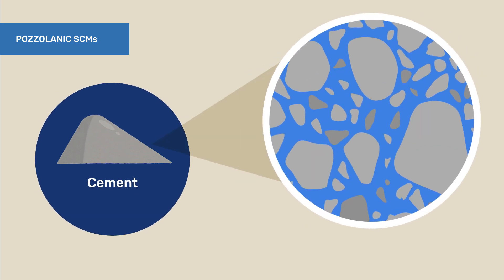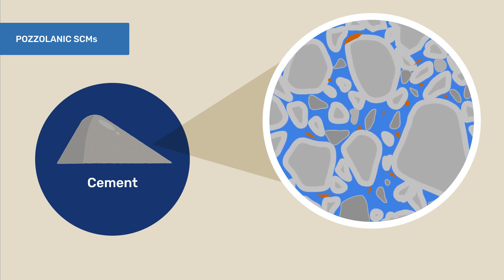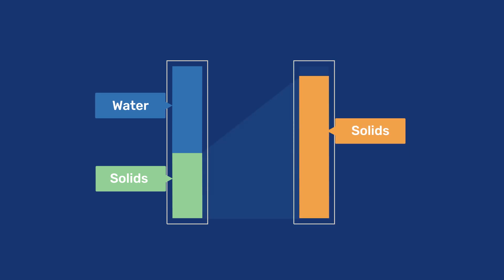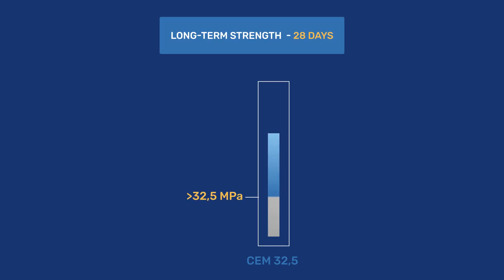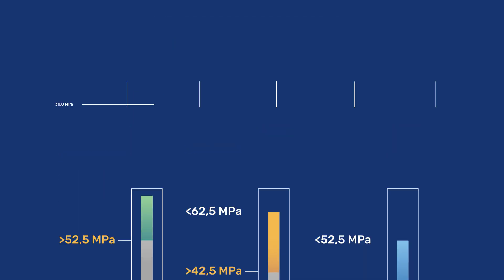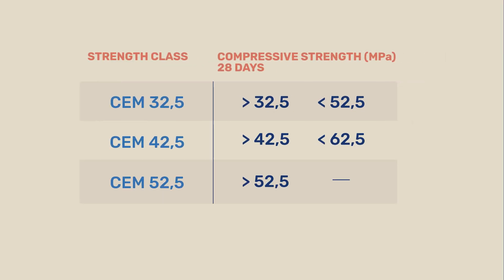As explained in previous videos, in first order, the setting and hardening of mineral binders results from precipitation of hydrates that occupy a larger volume than the starting volume of reactive solids before their reaction with water. We saw that cements are classified first in terms of their long-term strength, taken at 28 days, and then in terms of their early strength, taken at 2 days. We begin by considering the longer-term strength to reduce the relative importance of hydration kinetics.